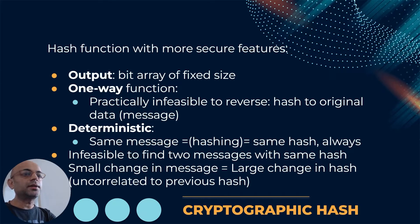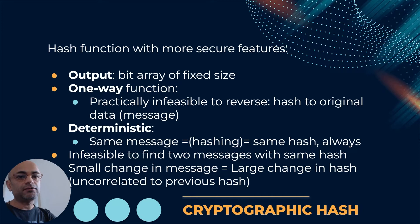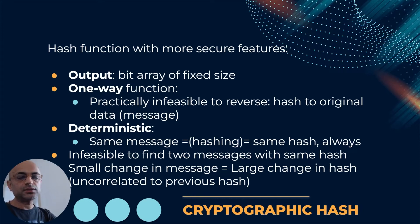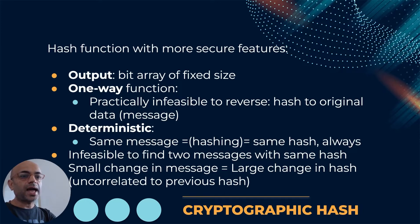The function should be deterministic: if you take the same input message and hash it, the hash value should not differ — it should always return the same hash. That is the deterministic requirement of the cryptographic hash function. It should also be infeasible to find two messages with the same hash value. Additionally, if there is a small change in the input message, there should be a very large change in the hash value generated, meaning the output hash should be uncorrelated to the previous hash value.